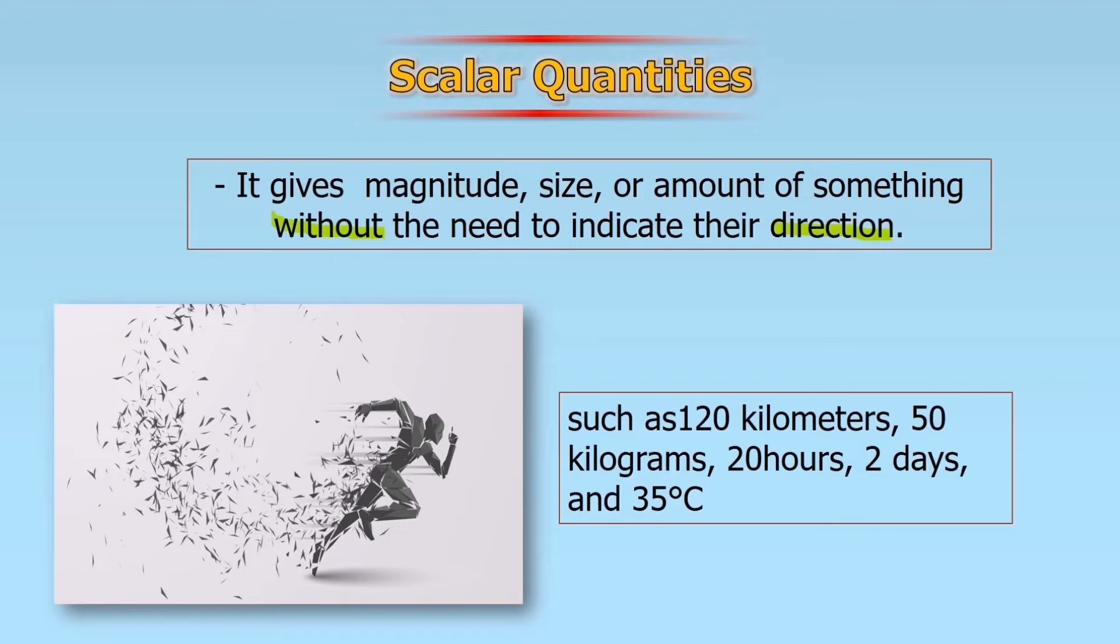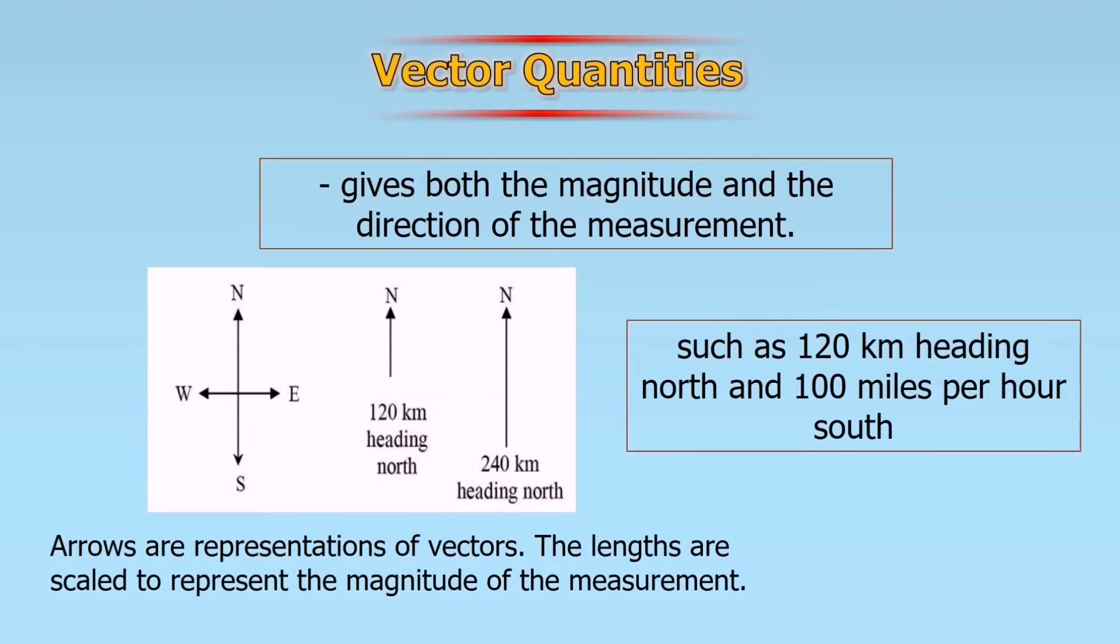However, in vector quantities, it gives both the magnitude and the direction of the measurement. For example, such as 120 kilometer heading north and 100 miles per hour south. So there is direction, where it is heading, the measurement and the direction.